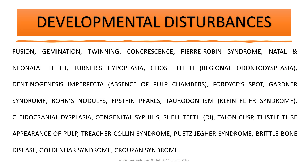Under developmental disturbances, you should know about fusion, gemination, and twinning — the difference between gemination and twinning, and the difference between fusion and twinning — as well as concrescence, Pierre Robin syndrome or sequence and its three classical features, natal and neonatal teeth and the difference between them, Turner's hypoplasia, the difference between generalized enamel hypoplasia and Turner's hypoplasia, and what is molar incisal hypoplasia.